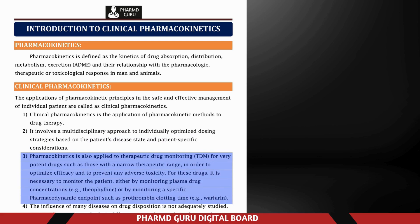Pharmacokinetics is also applied to therapeutic drug monitoring (TDM) for very potent drugs with a narrow therapeutic range, in order to optimize efficacy and prevent adverse toxicity. For these drugs, it is necessary to monitor the patient either by monitoring plasma drug concentrations — for example, theophylline — or by monitoring a specific pharmacodynamic endpoint such as prothrombin clotting time, for example, warfarin. TDM studies ensure the patient is in the right dosing range, and doctors and healthcare professionals continuously monitor the patient.